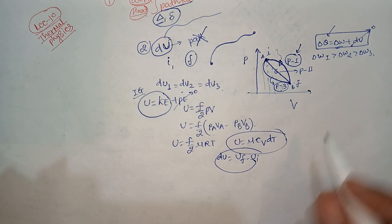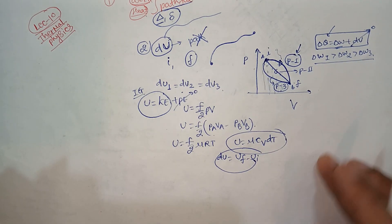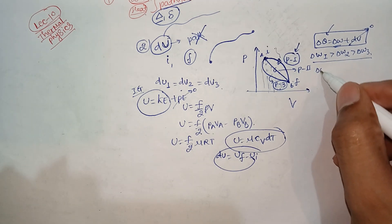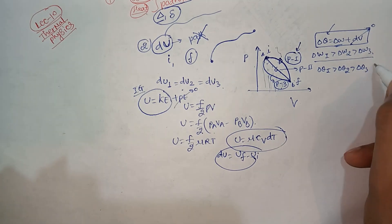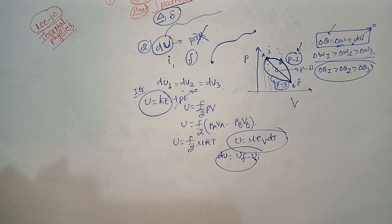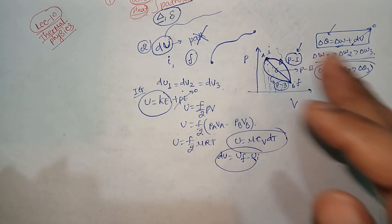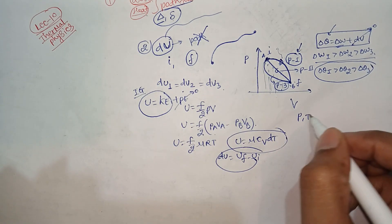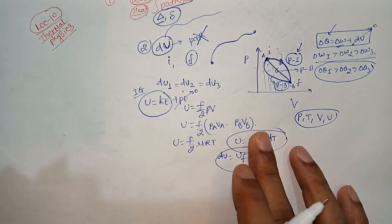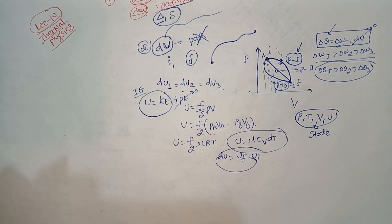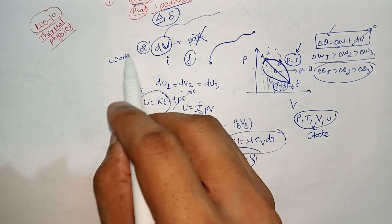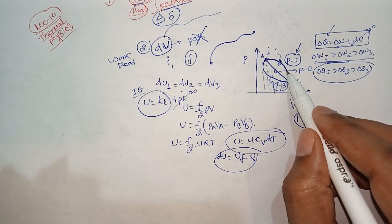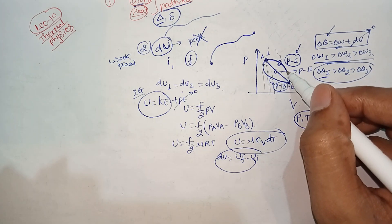Since internal energy is the same for all three processes, the total heat will differ by the work done. This confirms that work done and heat are path functions — they depend on the path followed. Meanwhile, pressure, temperature, volume, and internal energy are all state functions.